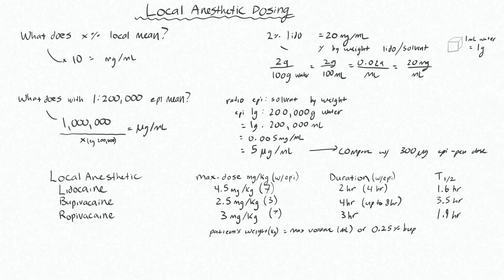This is more relevant in pediatrics, where you must be careful not to give a 20 kilogram child more than 20 mils of 0.25 percent bupivacaine. Also, local anesthetics have additive toxicity — you cannot give 4.5 milligrams per kilogram of lidocaine and 2.5 milligrams per kilogram of bupivacaine together, as that would almost certainly result in some amount of systemic toxicity.